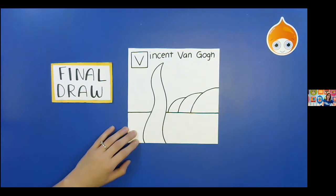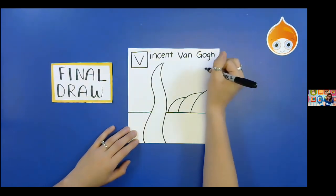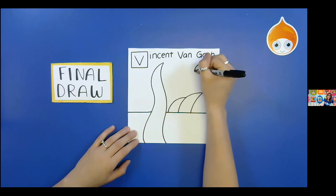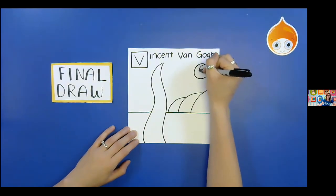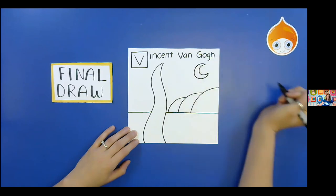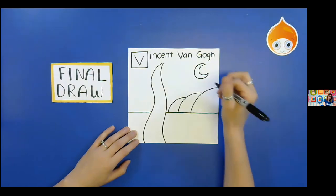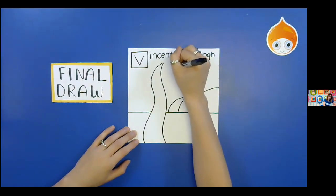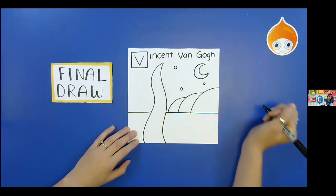I'm going to add a moon to my sky. Again, you can draw a circle for a full moon, or if you want a crescent moon, you can draw the letter C and connect that with a smaller C. And we're going to add stars to our sky by drawing circles — I'm going to add three on the right side of my cypress tree and one on the left side.